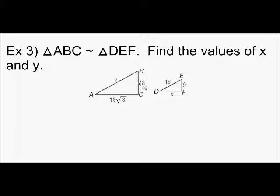So, I know BC is 18. BC goes with EF. EF is 9. So, I'm going to write my scale factor.